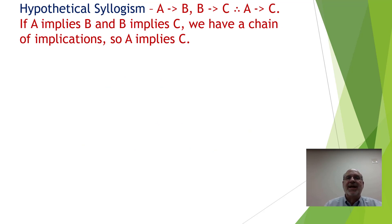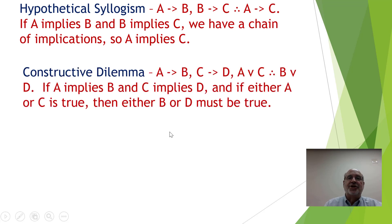Hypothetical syllogism: A implies B, B implies C, therefore A implies C — a chain of implications leading to A implies C. And a constructive dilemma: if A implies B and C implies D, and we know that A or C is true, then B or D must be true — one of those implications must follow through.